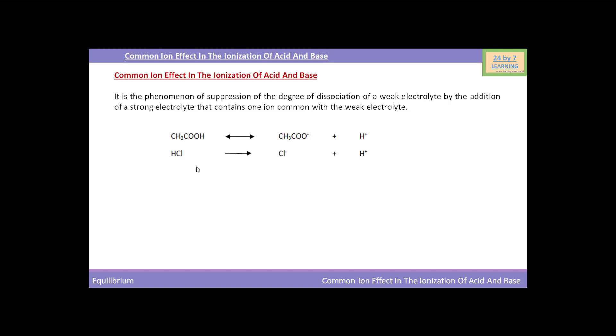Strong electrolyte is HCl which contains one common ion like hydrogen ion. The degree of dissociation of weak electrolyte by the addition of a strong electrolyte that contains one ion common with the weak electrolyte causes suppression of the degree of dissociation. This is called common ion effect.